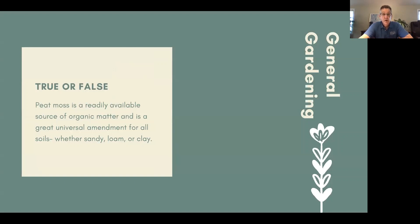True or false: Peat moss is a readily available source of organic matter and is a great universal amendment for all soils, whether sandy, loam, or clay. This one is false. There are two kickers: first, 'readily available' — peat is not a readily renewable resource. There is a finite amount of peat, and that is causing concern about availability in the future.